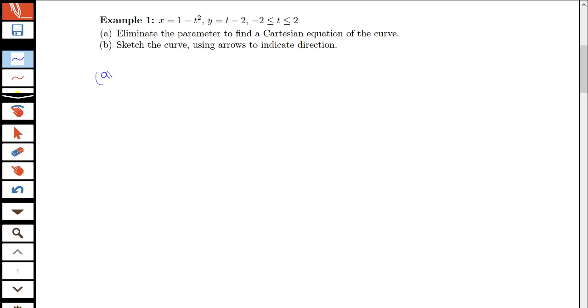For the eliminating the parameter step, notice here I have x is 1 - t² and y is t - 2. I can use a little bit of substitution. If y is t - 2, that means t is y + 2. So I can say x is 1 - (y + 2)².